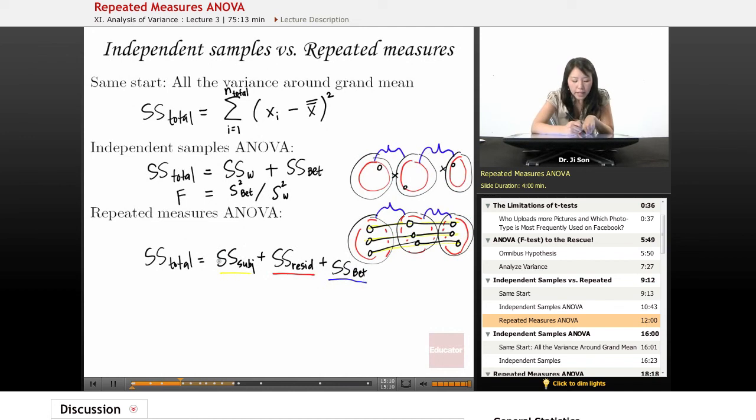So just to recap, this is something that we could explain. However, we're not interested in. This is something we cannot explain. And this is something we are very interested in. So our F statistic will actually become our variability between divided by our variability residual.